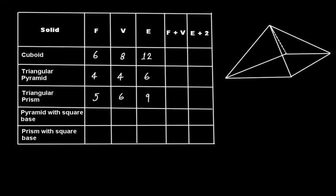Next is the pyramid with a square base. It has a square base, and on each of the four sides of the square there is a triangular face — so four triangular faces and one square face, giving five faces. Vertices: one, two, three, four, and five. Edges: one, two, three, four, five, six, seven, and eight — so eight edges.